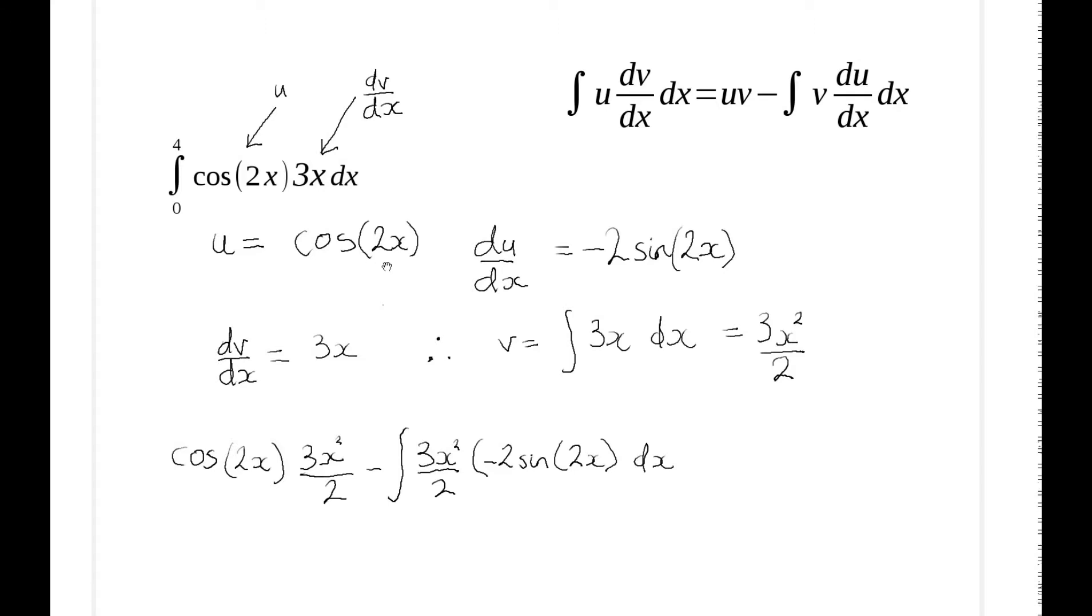I've worked out my values here. u is cos(2x), the derivative of that is -2sin(2x). My dv/dx is 3x, and the integration of that is 3x²/2. So I've got my four values. If I take those four values and insert them into this rule here, I get this result.